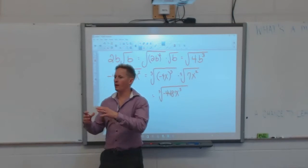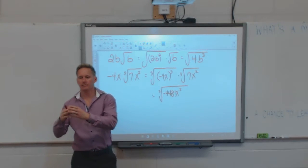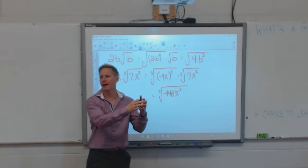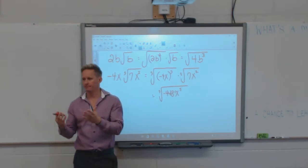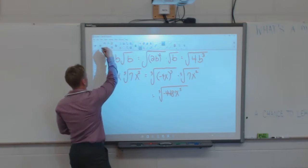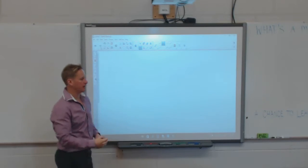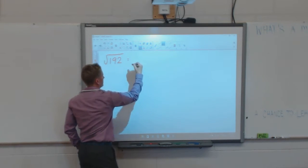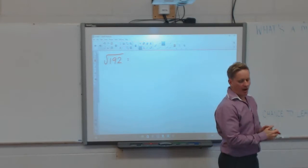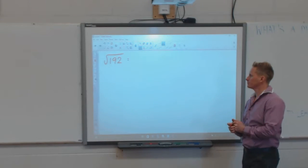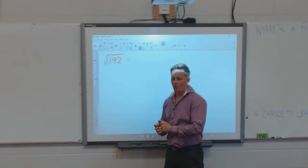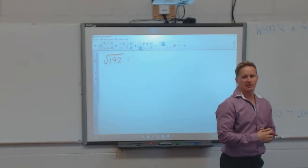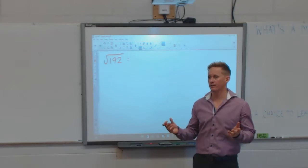So that was going from mixed to entire. The next step is going from an entire to a mixed radical. Let's do a larger number: square root of 192. What value goes into 192 that is a perfect square?